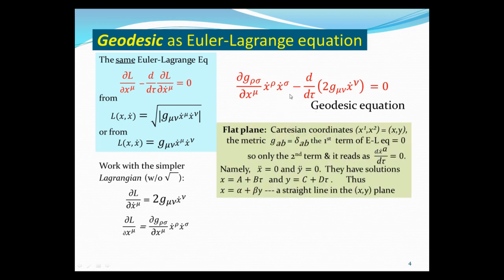Let's check this with something familiar. In the flat plane, we expect the geodesic to be a straight line. For the flat plane with Cartesian coordinates x and y, the metric is just the constant delta_ab. The first term of the geodesic equation vanishes because differentiating a constant with respect to position gives zero. The second term also simplifies because the metric is independent of tau, leaving simply d²x/dtau² = 0 and d²y/dtau² = 0. These have solutions x = a + b*tau and y = c + d*tau with constants a, b, c, d. Eliminating tau gives a linear relation between x and y — the equation of a straight line.